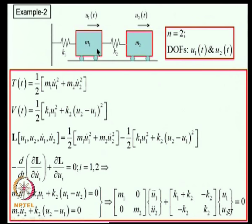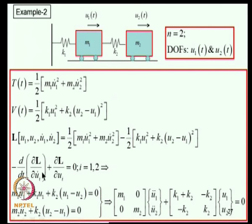The total kinetic energy consists of contributions from both masses. The potential energy is ½K₁U₁² + ½K₂(U₂−U₁)². The Lagrangian is a function of U₁, U₂, U̇₁, and U̇₂. Applying the Lagrange equation for U₁ and U₂ gives two equations of motion that can be written in matrix form as [M]{Ü} + [K]{U} = {0}, where [M] is the symmetric mass matrix and [K] is the symmetric stiffness matrix.